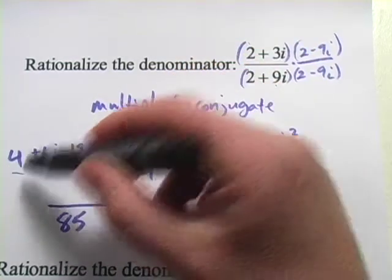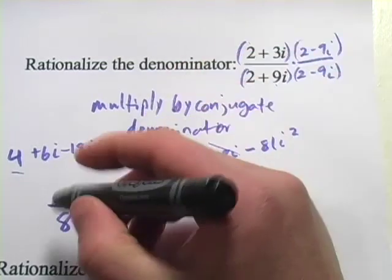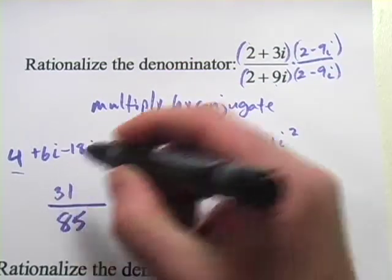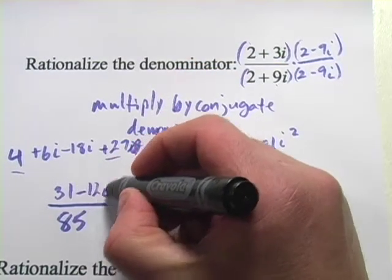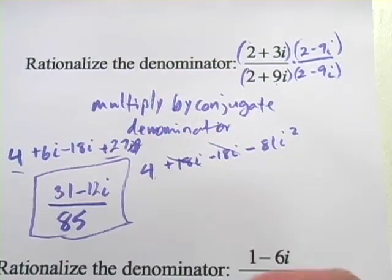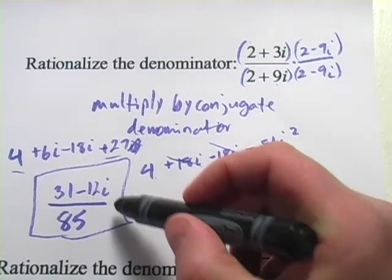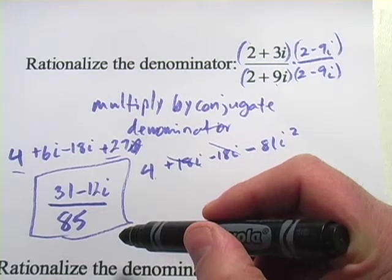Now, let's add our like terms. We've got 4 and 27, so that's going to be 31. And we've got 6i and negative 18i. That's going to be minus 12i. And there is our simplified quotient with a rationalized denominator.